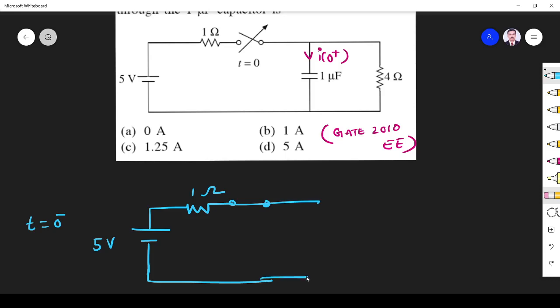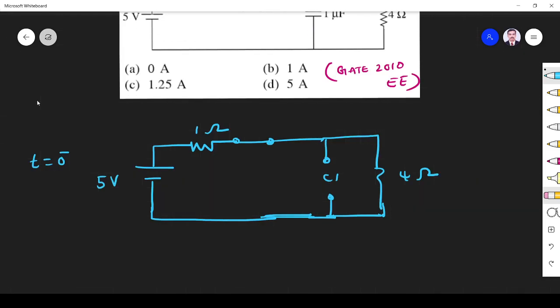So the capacitor will be open. Then it is 4 ohm. Now what is the voltage across capacitor C1 at t = 0-?